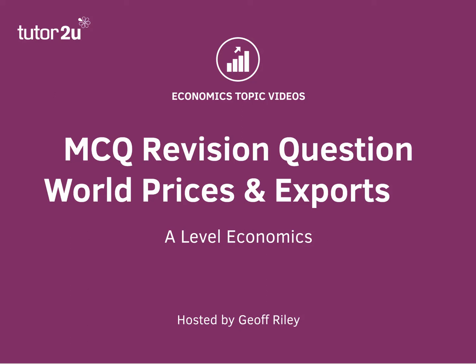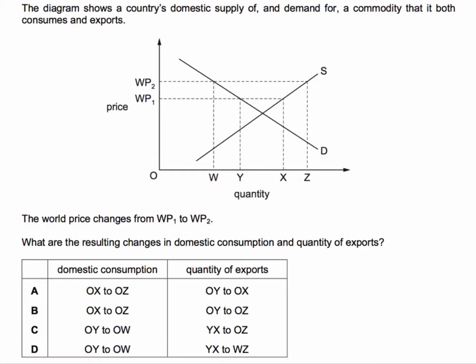Here's an interesting multiple choice question looking at the link between the world price of a commodity and the amount a country consumes domestically and is able to export. The diagram shows a country's domestic supply of and demand for a commodity — let's say copper — and this country both consumes and exports the product. The prevailing world price changes from WP1 to WP2, and the question is: what are the resulting changes in domestic consumption and the quantity of exports?